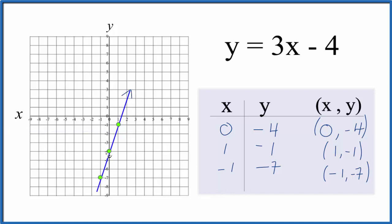Then we can put arrows here to show that it goes to infinity. So this is the graph for y equals 3x minus 4. Let's check our work with slope-intercept formula.